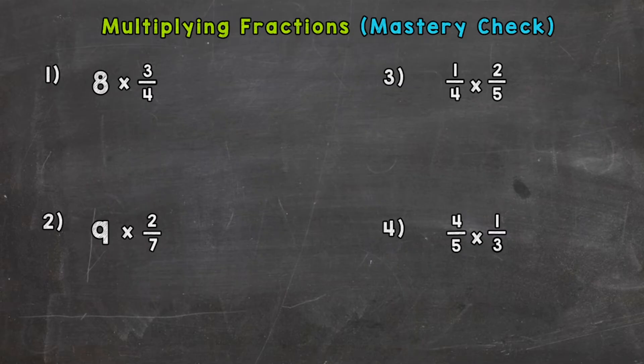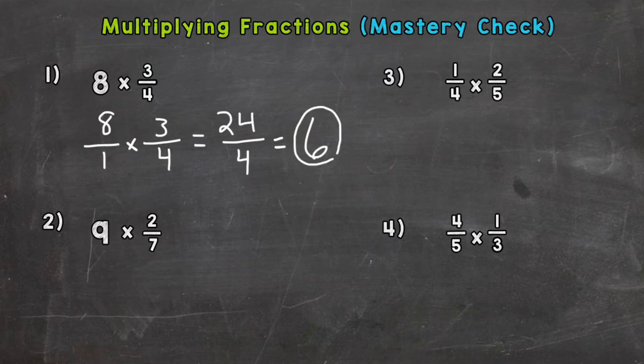Number one, we have 8 times 3/4. We need to put our whole number over 1 and then multiply straight across. 8 times 3 is 24 and 1 times 4 is 4. That answer is improper so we need to divide our numerator, the 24 divided by 4, which gives us 6 wholes with nothing left over. So we get a whole number result and the answer is 6.